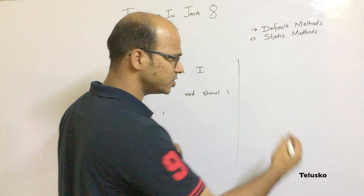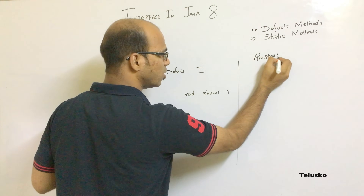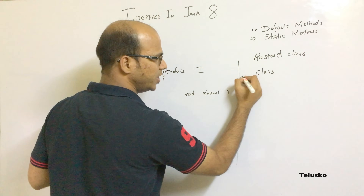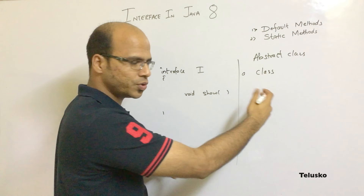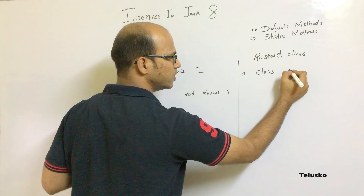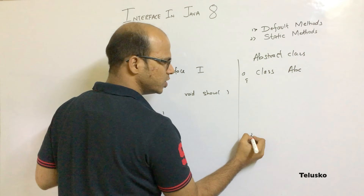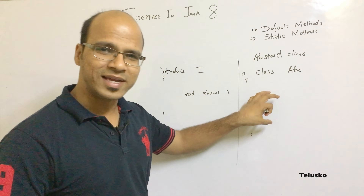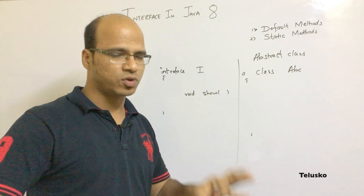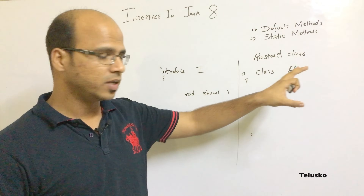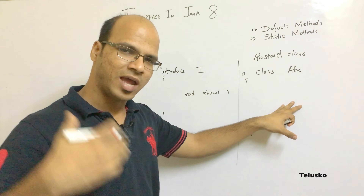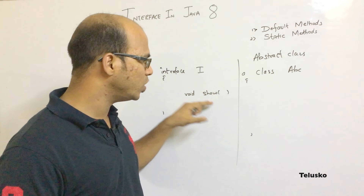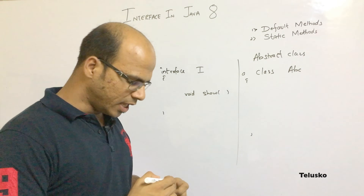On the other hand, in an abstract class — let's say abstract class ABC — you can both declare methods and define methods. So in abstract class we can make a method abstract or also have a defined method. But in case of interface, it should be only abstract methods.